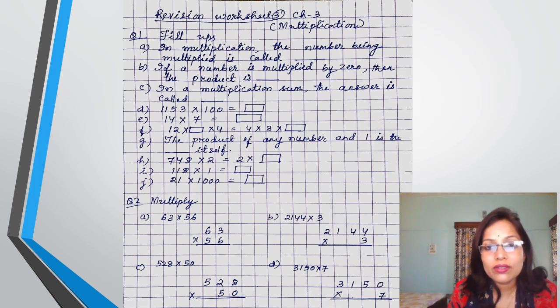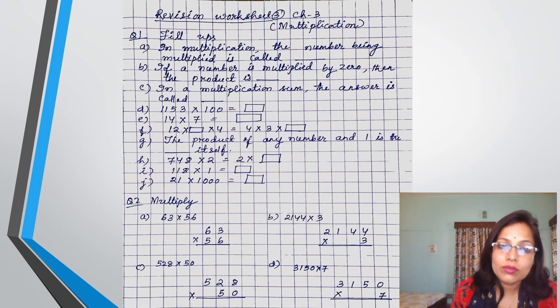So here the multiplication, the number being multiplied is called as. So that you have to write. Next question B. If a number is multiplied by 0, then the product is thus.